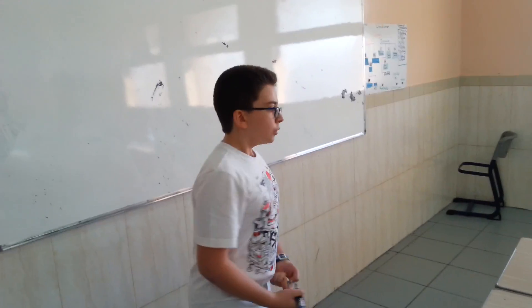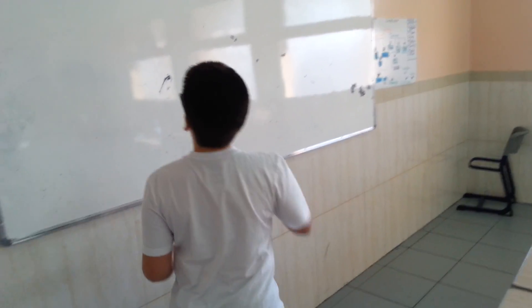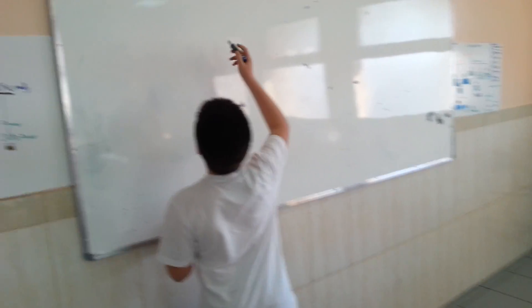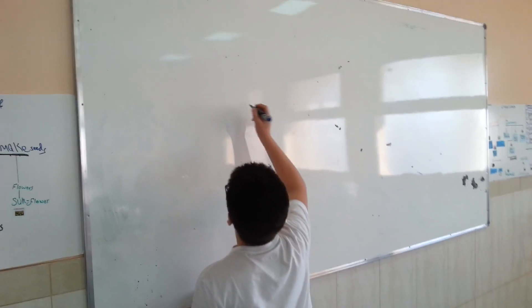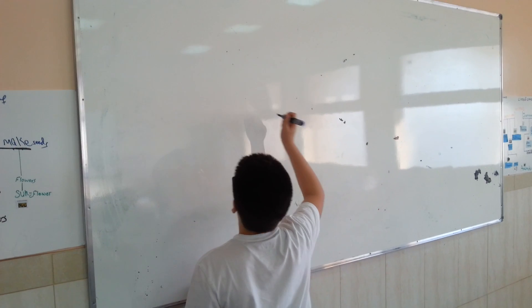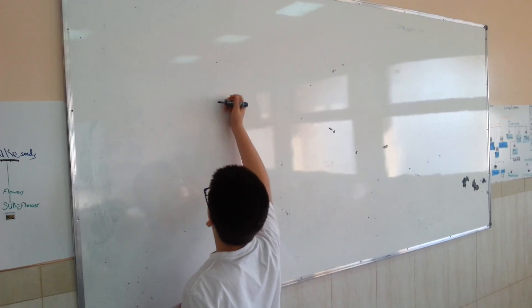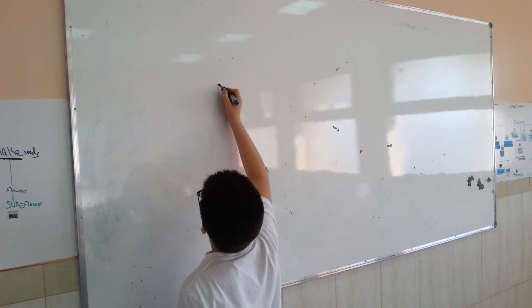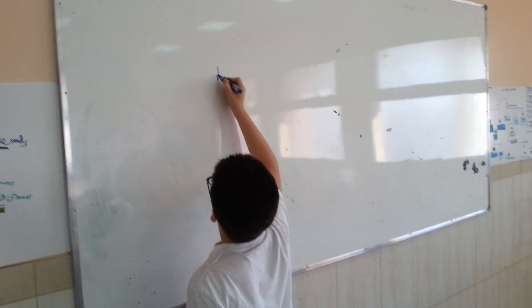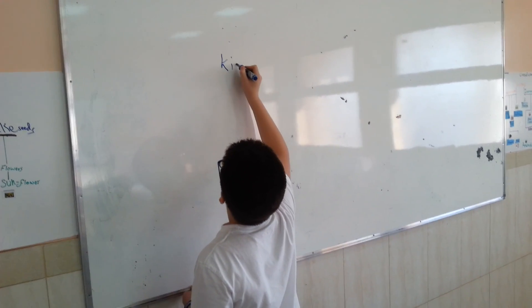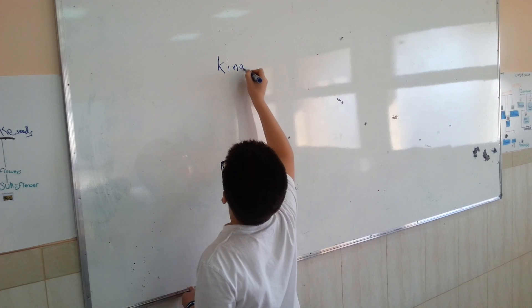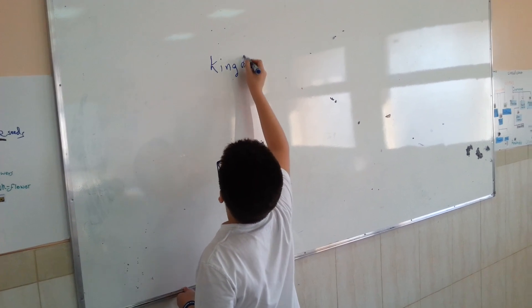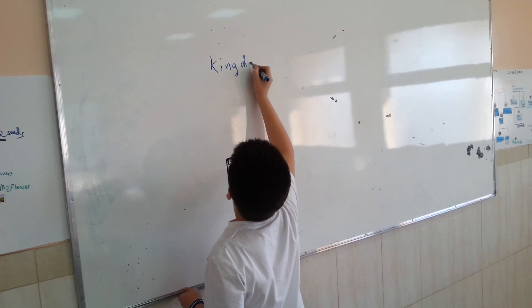We are going to classify animals. We are going to start with the biggest kingdom that has all the animals and birds, which is Kingdom Animalia.